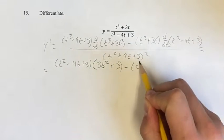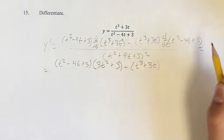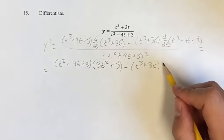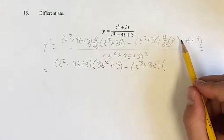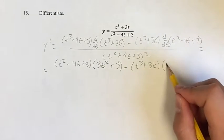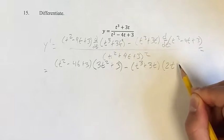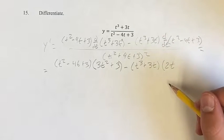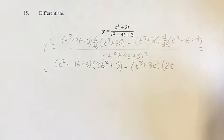Minus t cubed plus 3t times the derivative of this. So the derivative of t squared, again, power function, you bring down the exponent into the coefficient times t to the 2 minus 1. t to the 2 minus 1 is just t to the first power, which is just t. Leave that alone, then.